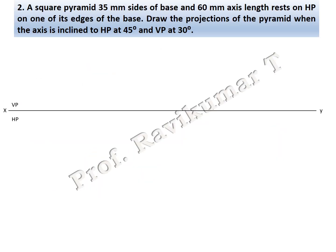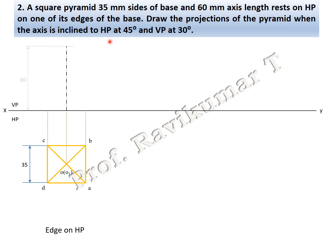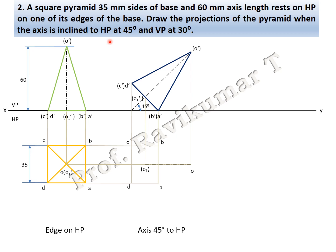The next problem: 35 mm sides of base, 60 mm axis length, resting on HP on one of its edges — edge condition again. The difference: draw the projection when the axis is inclined to HP at 45 degrees AND to VP at 30 degrees. When the axis is inclined to both planes, it is a locus problem. The first and second positions are the same as the previous problem.